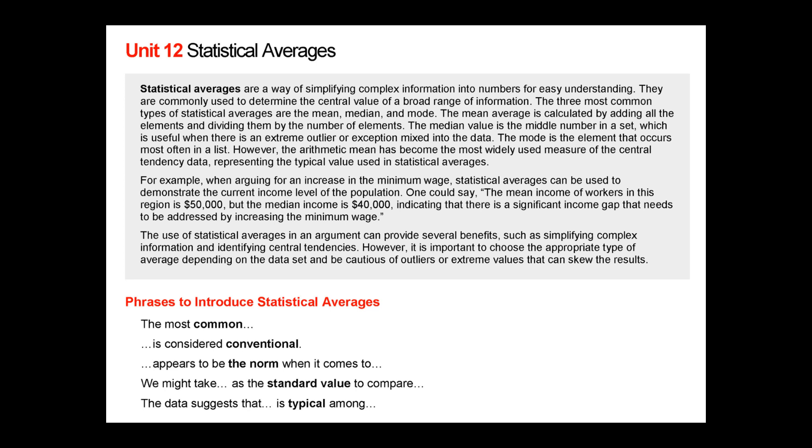The three most common types of statistical averages are the mean, median, and mode. The mean average is calculated by adding all the elements and dividing them by the number of elements. The median value is the middle number in a set, which is useful when there is an extreme outlier or exception mixed into the data. The mode is the element that occurs most often in a list.